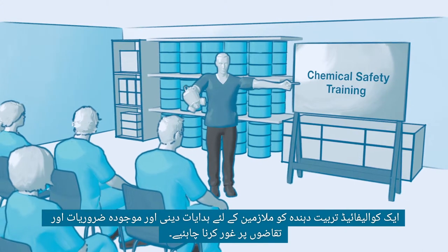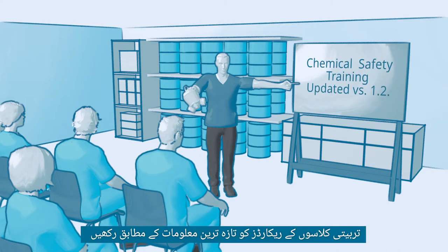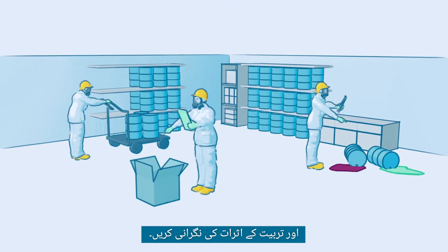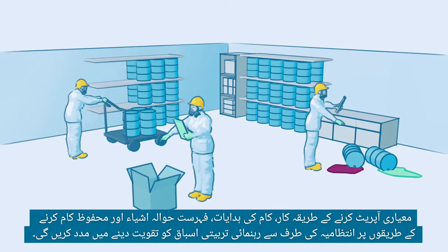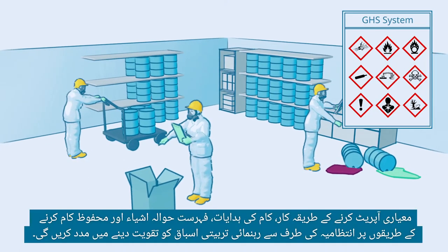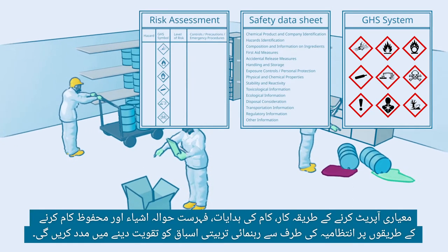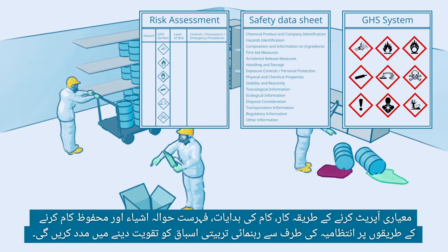A qualified trainer should instruct the employees and take current needs and requirements into consideration. Keep up-to-date records of the training classes and monitor the training impact. Standard operating procedures, work instructions, checklists, and guidance by management on safe work practices will help to reinforce the training lessons.